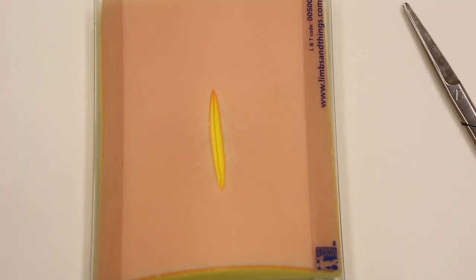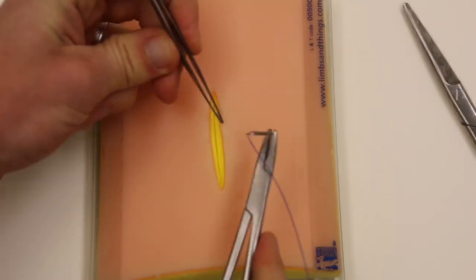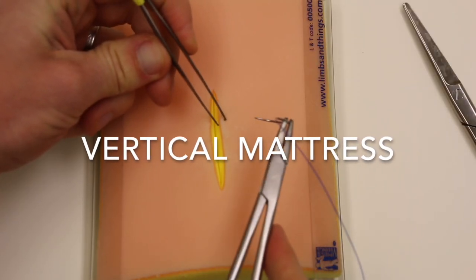Loading the needle in the same fashion. You're going to use these in cases where you're closing high tension incisions. So the outside of the knee or closing a fasciotomy would be common. First we'll show the vertical mattress.